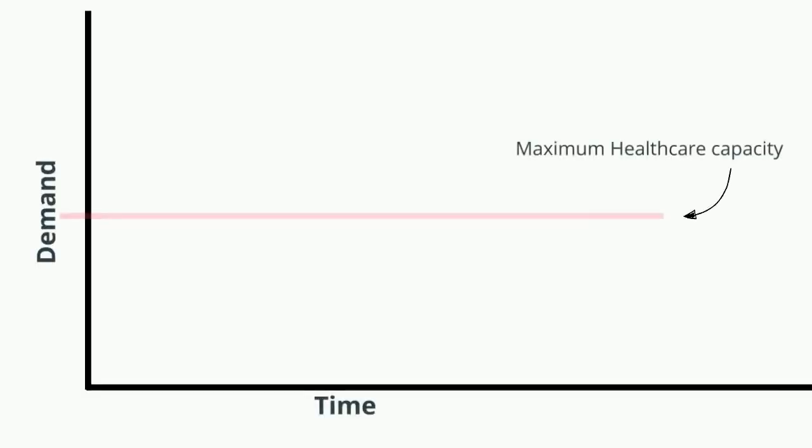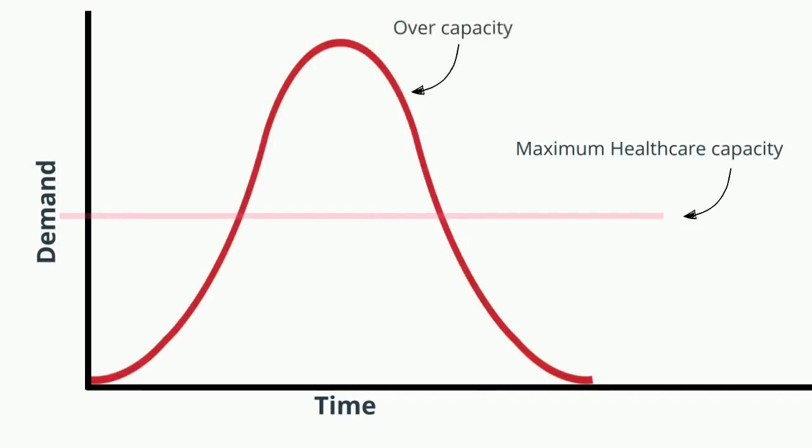In normal situations, we do not exceed this line, and everybody gets the care they need. However, when we have a pandemic, the number of people who need help rises past this maximum. That means all the people above this line can't get the adequate care that they need, if they can get care at all.